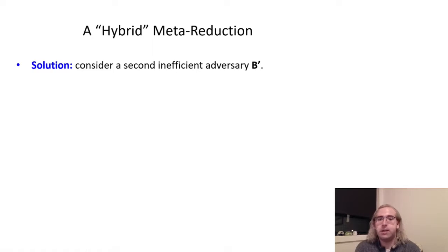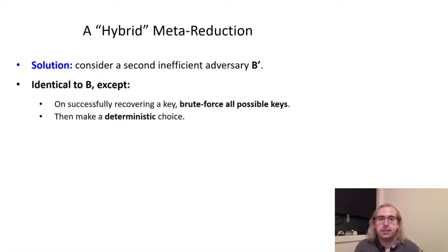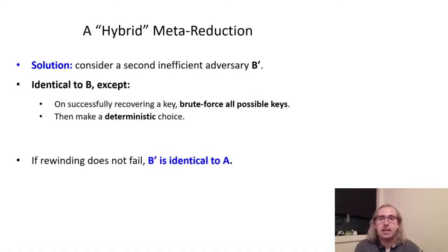Now, we can't construct an efficient meta-reduction that does this, due to the key uniqueness issue we were having before. However, suppose we consider an inefficient meta-reduction, say B', that does as follows: first, it acts as B does, making tag queries, opening everything but the target instance, and then rewinding to try and extract a key. However, when it does recover a correct key, B' will brute force all possible keys that agree with the tag queries for the target instance, so that it can choose a deterministic one of those keys — say the lexicographically first of them. And, since A is already an inefficient adversary, we can have A do this as well, so that B' and A will do the same thing, as long as the rewinding works and any key is recovered.